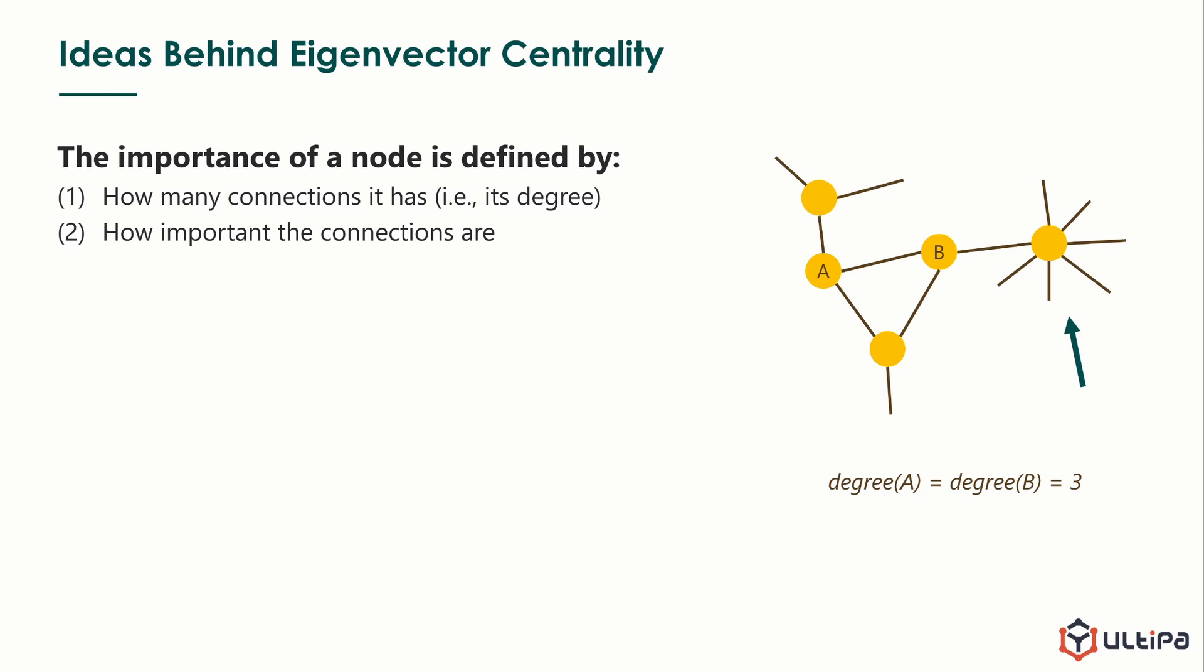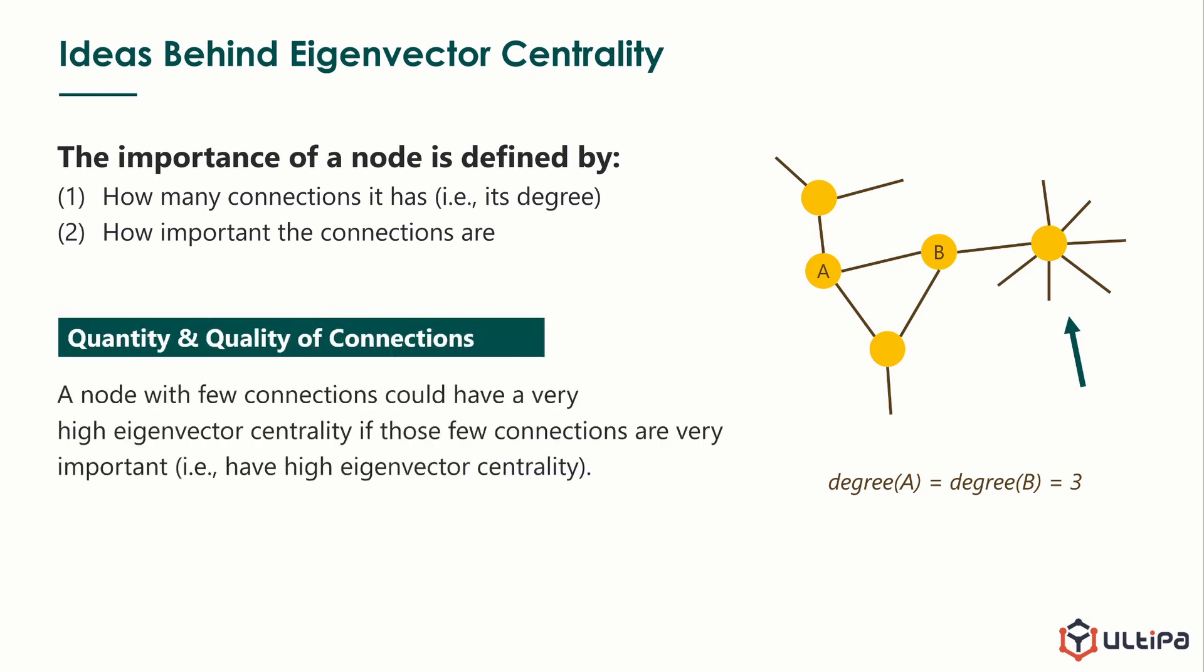So the second factor makes sense, that is, how important the connections are. Eigenvector centrality is a more sophisticated view of centrality. Intuitively, it considers not just how many people you know, but also who you know. It balances the quantity and quality of connections. In other words, a node with few connections could have a very high eigenvector centrality if those few connections are very important.